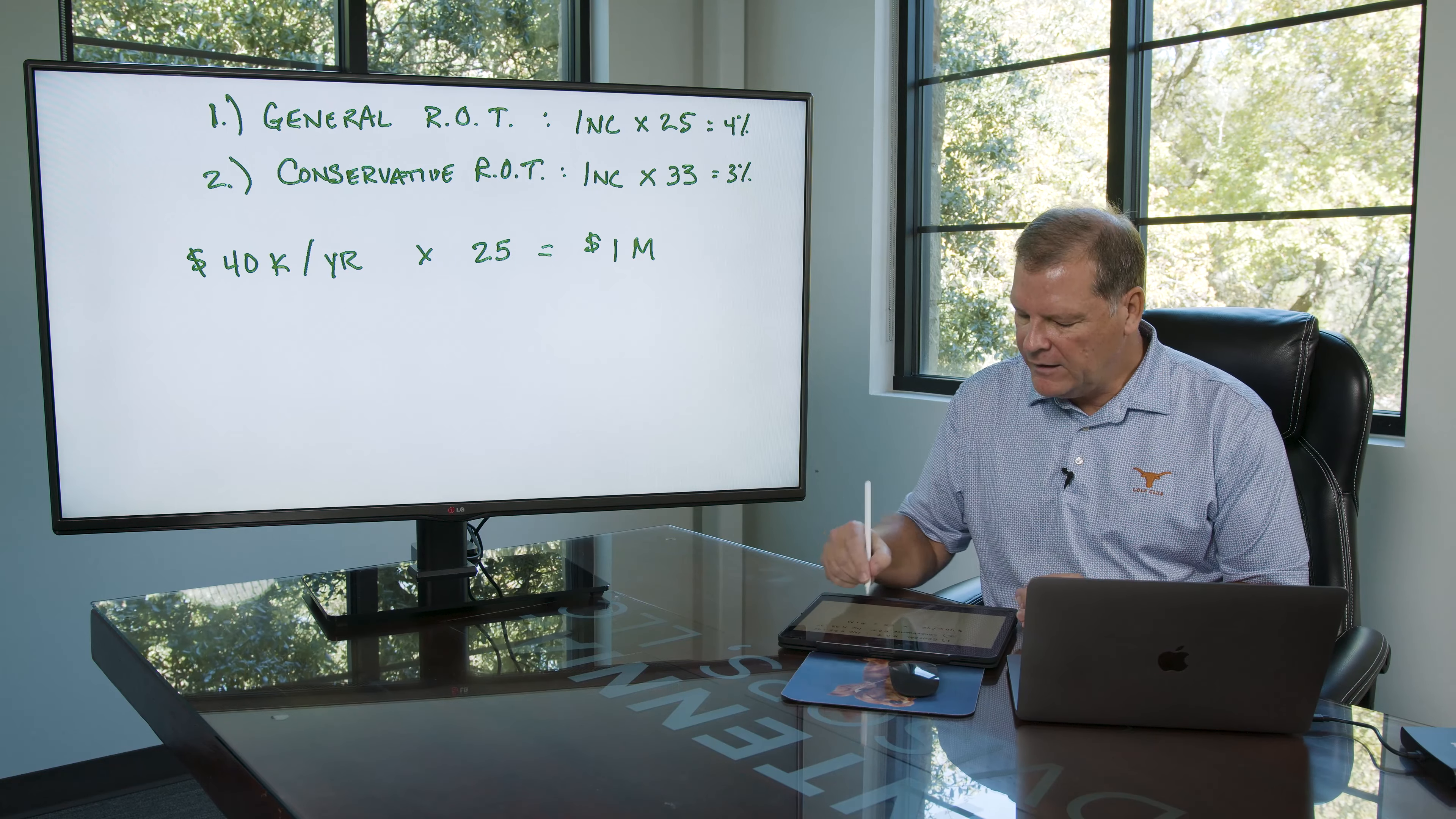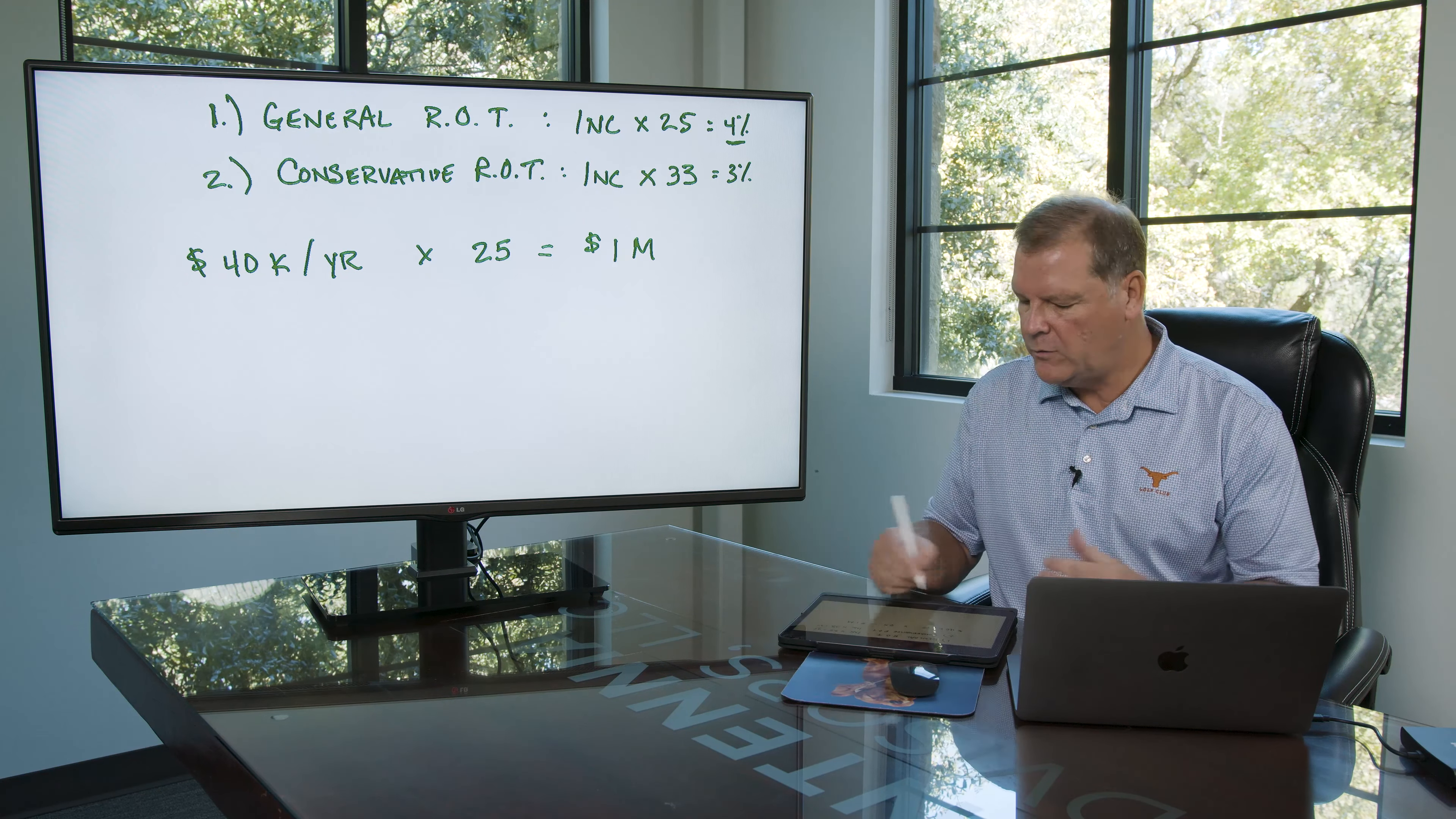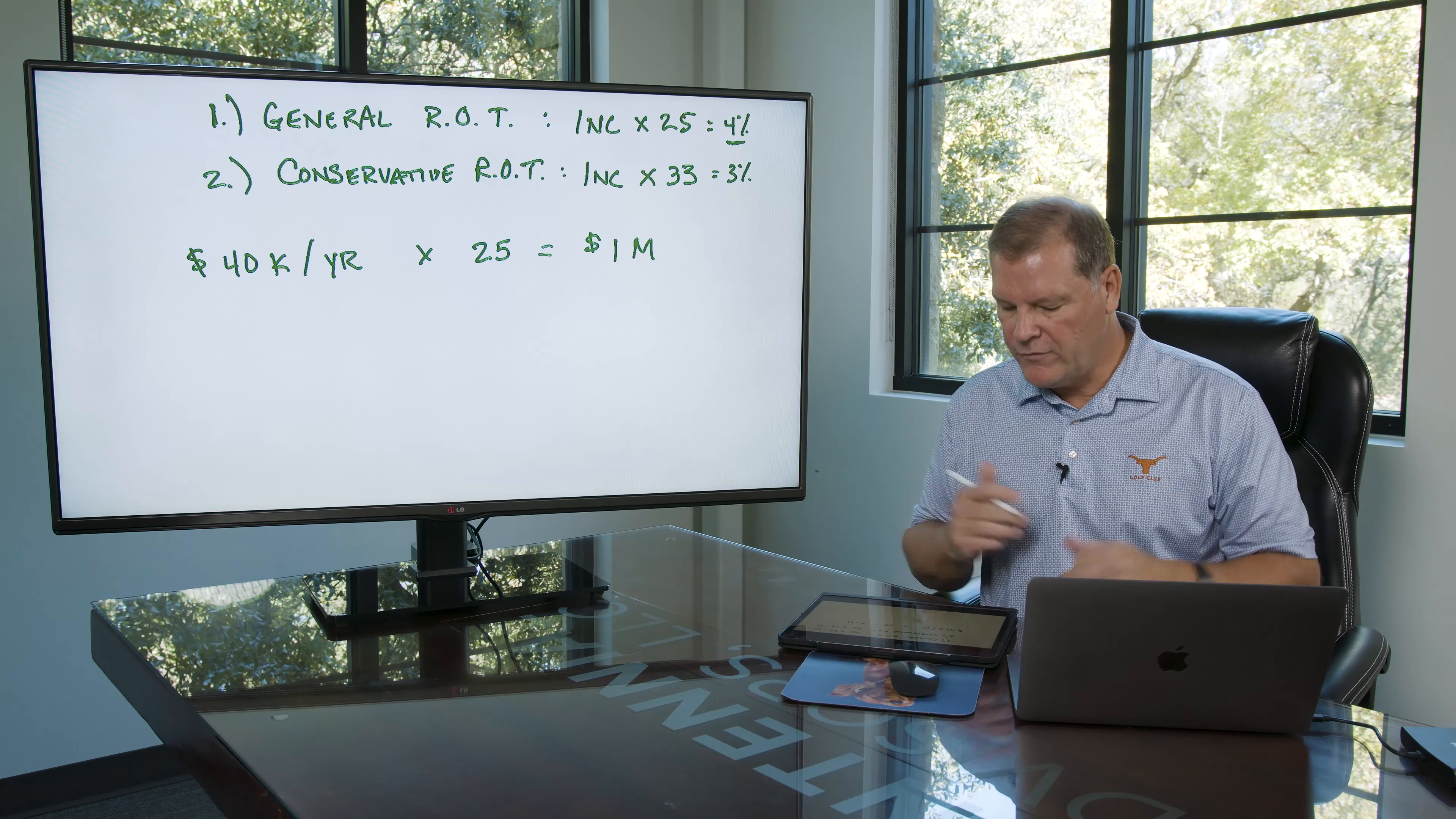It says you need to save $1 million. And $1 million, again, if you do the math times 4% up here, equals $40,000 a year. How's that? Pretty simple, pretty straightforward.